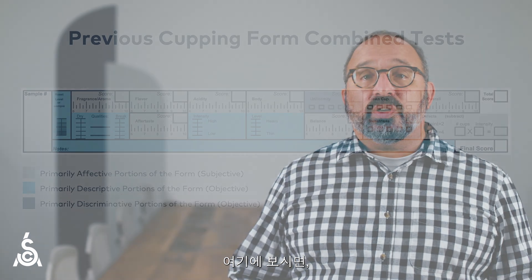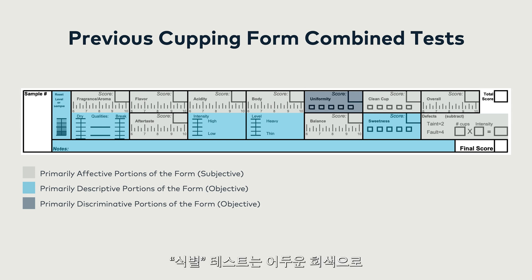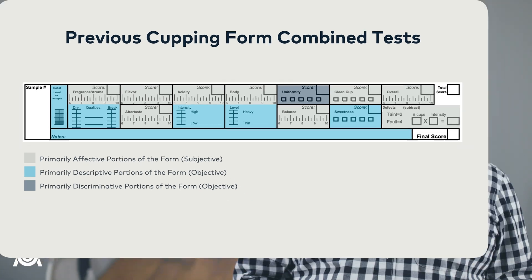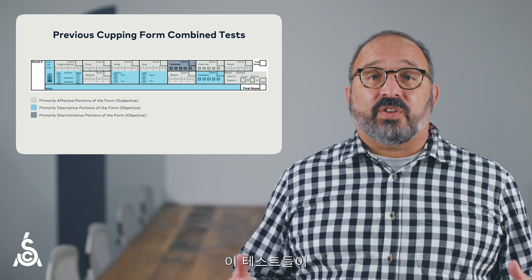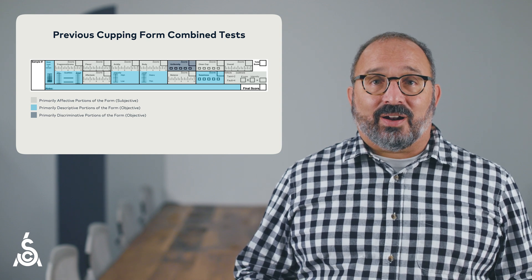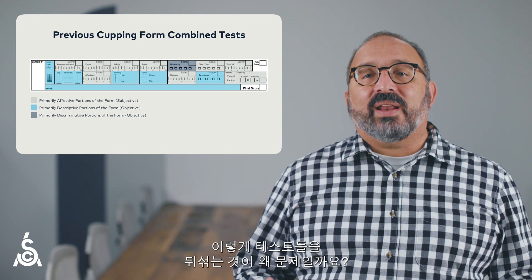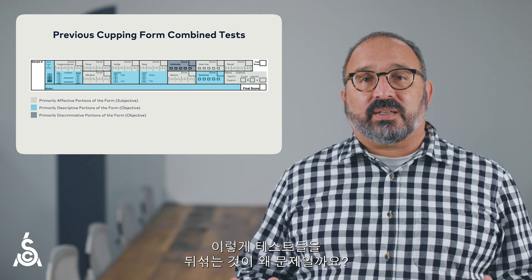In this image, you can see the affective portions of the form in gray, the descriptive portions of the form in blue, and the discriminative portions of the form in dark gray. Aside from the problem that these tests are different in terms of objectivity and subjectivity — more on that later — why does it matter whether these types of tests are mixed?